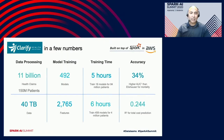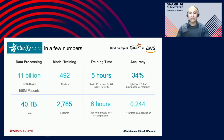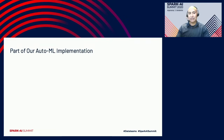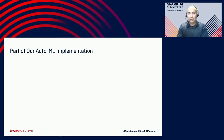First, something quick about Clarify Health. We process about 11 billion healthcare claims for 150 million patients — a little over 40 terabytes of data. We train hundreds and hundreds of models; right now we're at 2000 models and they contain about 2000 features. Everything is built in AWS and Spark, and we can train models for 84 million patients within five hours.